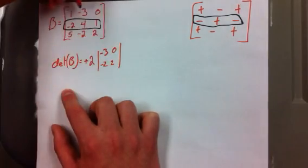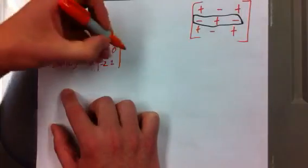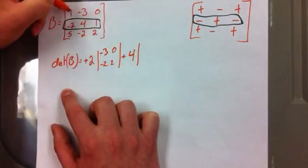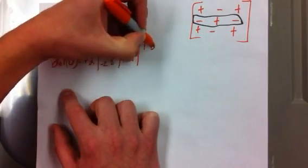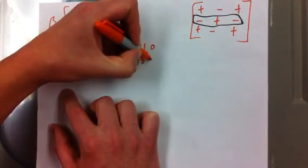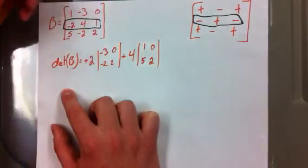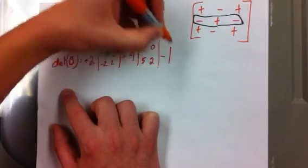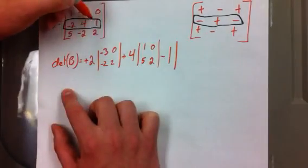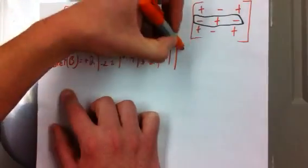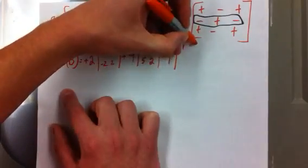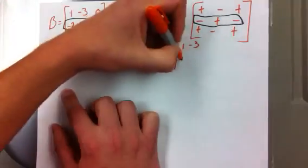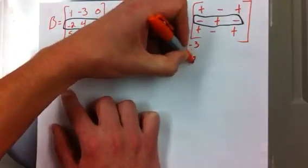Then we have a four, and that's positive, so it's plus four times one, zero, five, two. And then we have a one here with the minus sign, so it's minus one times — ignore the row and the column — and then we have a one, negative three, five, and negative two.